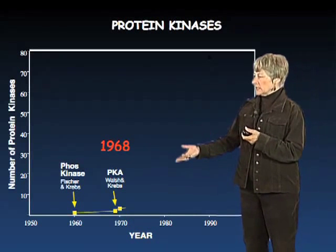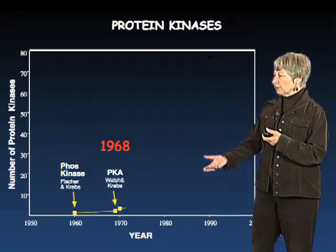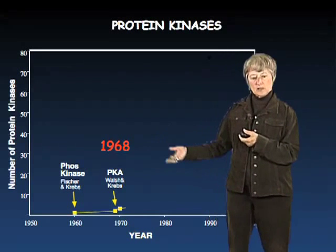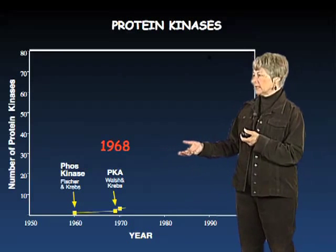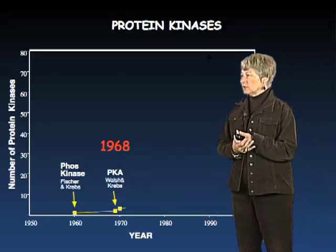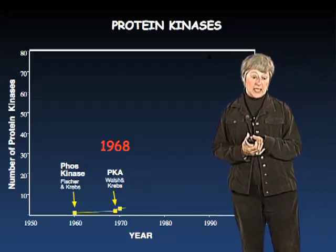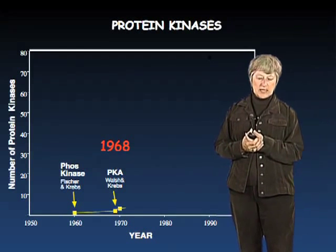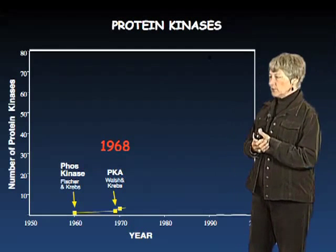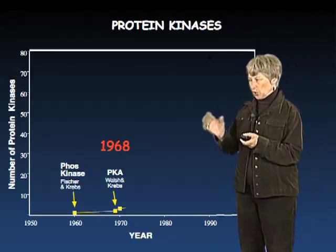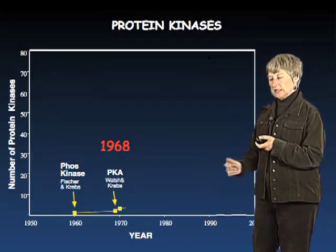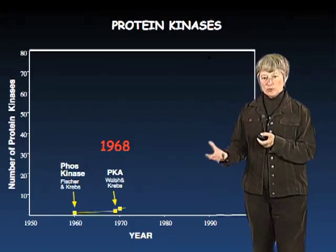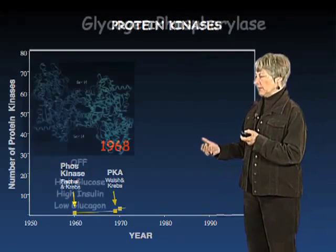Let's go back to the history. Phosphorylase kinase is the kinase that phosphorylates glycogen phosphorylase. The second one to be discovered is called PKA, or cyclic AMP-dependent protein kinase. I'm going to tell you about those two and show you how they work together as a team to regulate this biological event.